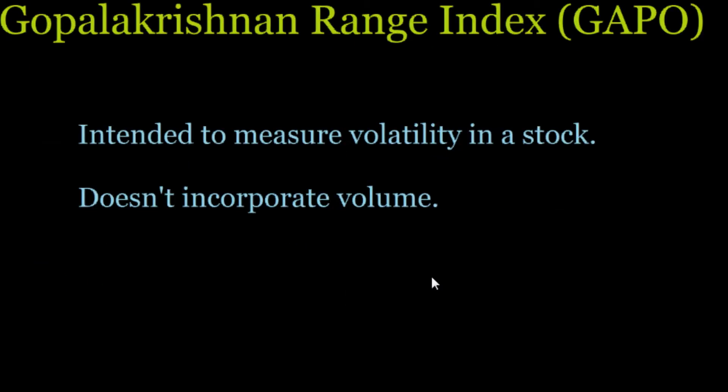The GAPO is intended to measure the volatility in a stock, and it doesn't incorporate volume. The only reason I throw that in there is that sometimes either your volume information isn't included, or you might not want to use volume, or you might want to add volume to the equation to make it that much better. But it's kind of neat when you can have an indicator that mimics volume yet does not use volume.